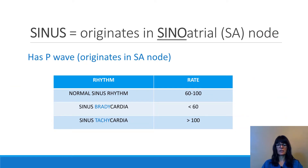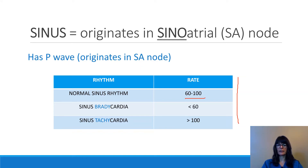Whenever there's sinus in the terminology, that means that the impulse originates from the SA node, which is the sinoatrial node. Remember from the previous videos that the SA node has an intrinsic heart rate of 60 to 100. The normal sinus rhythm has a heart rate of 60 to 100 — the normal intrinsic beat of the SA node, the internal pacemaker. A normal pulse is 60 to 100, bradycardia when it's slower than 60, or tachycardia when it's greater than 100, and this all applies to sinus rhythms as well.